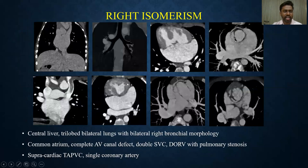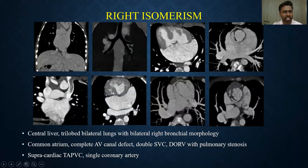Coming to the right isomerism case: the liver was centrally located and the bilateral bronchi showed right-sided morphology with trilobed lungs, a common atrium with complete AV canal defect, persistent left superior vena cava, double outlet right ventricle with pulmonary stenosis having bilateral subarterial conus, and a single coronary artery arising from the posterior facing sinus. This patient had a supracardiac TAPVC, with the common chamber ascending and draining into the superior vena cava.